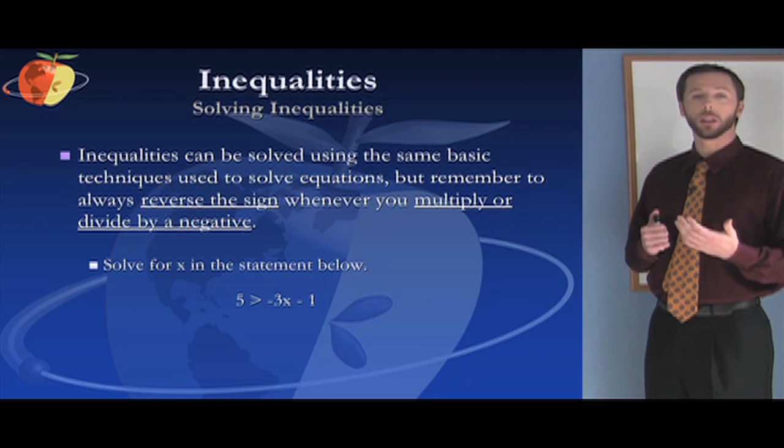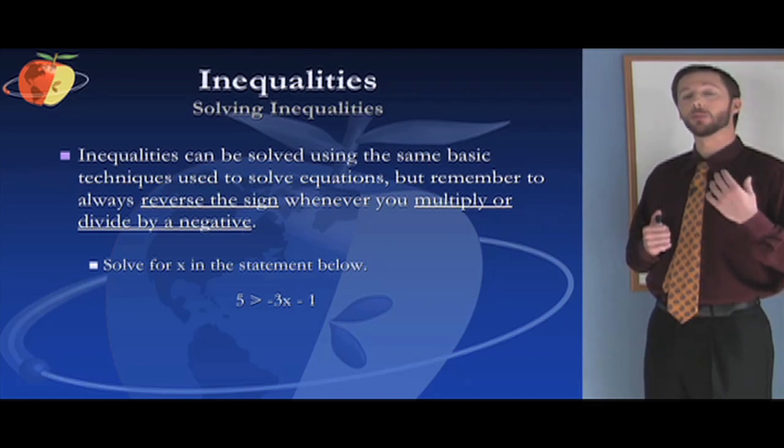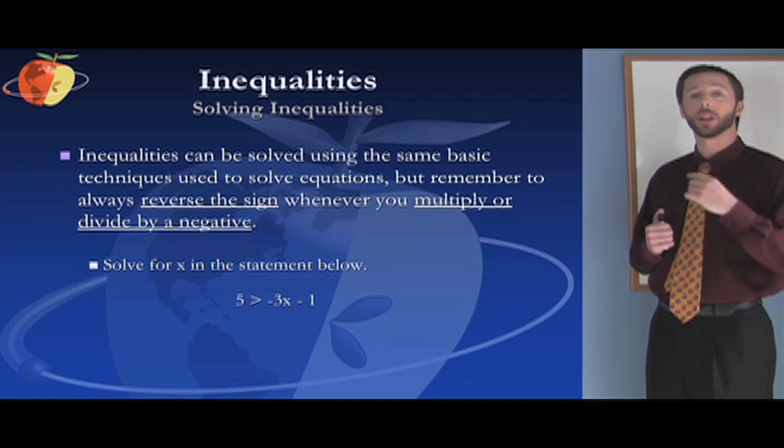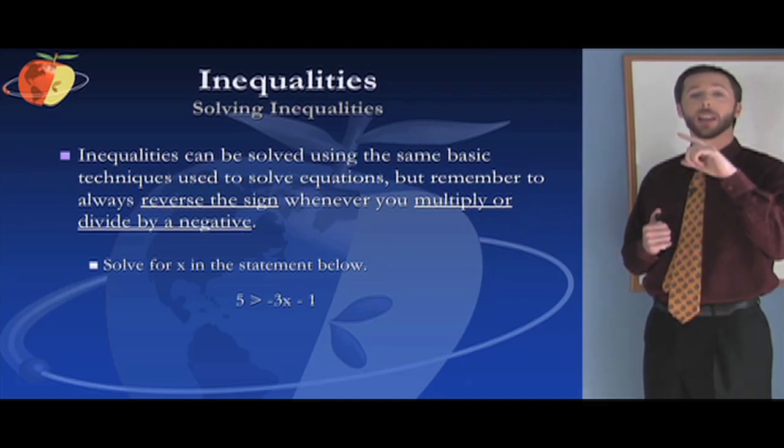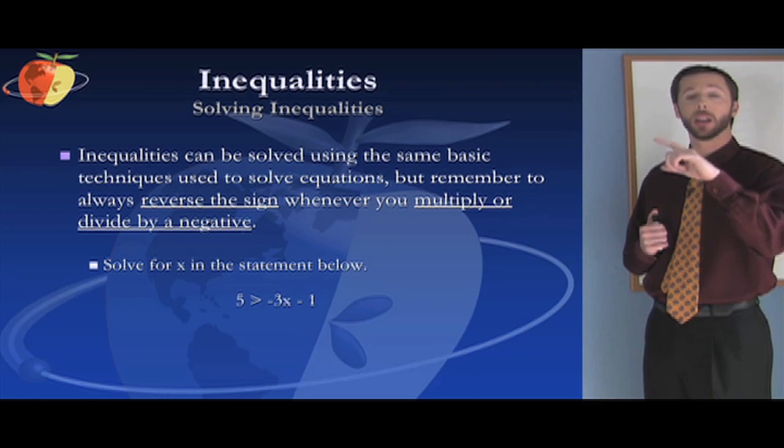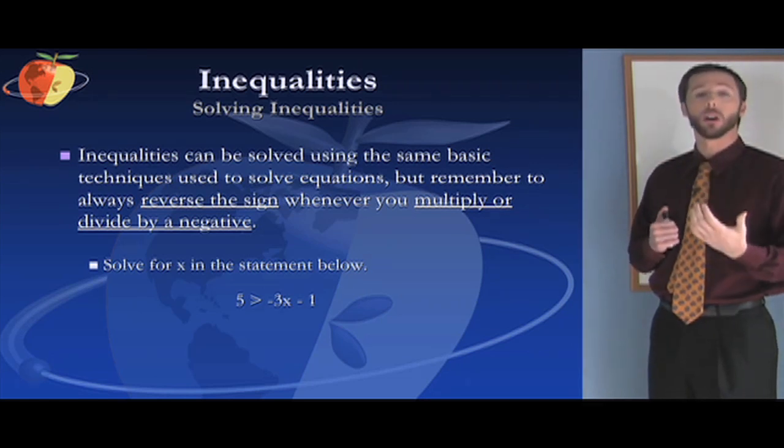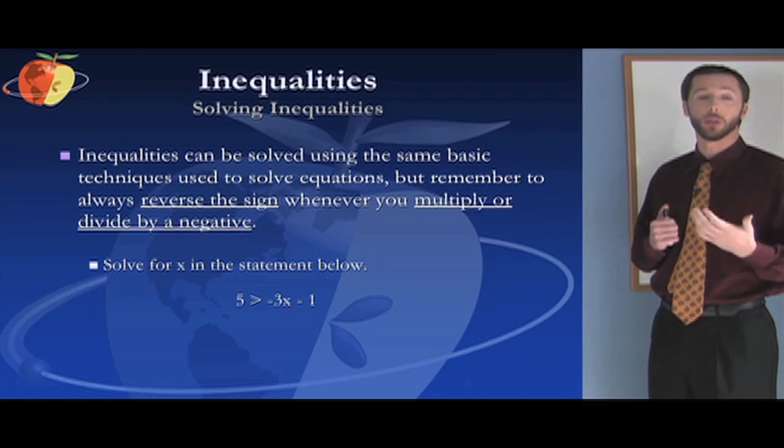When you solve inequalities, you're going to do just about all the same things you do if you're solving a normal equation. The only major rule that you need to remember that's different is that if you multiply or divide by a negative number, you need to switch the sign. So if it's greater than and then you multiply or divide by a negative, it's going to switch around and become less than. Other than that, you're still going to do all the same steps you would have done if it was a normal equation.